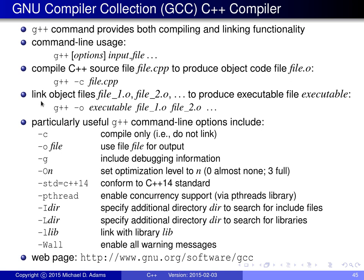To use G++ for linking, suppose we have object files file_1.o, file_2.o, and so on, and we want to link them to produce an executable called "executable". The command would be: G++ -o executable file_1.o file_2.o ... The -o option specifies the output file name, taking the name as its parameter, followed by the list of object files to link.